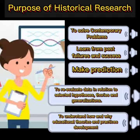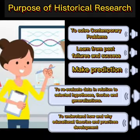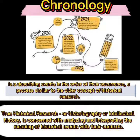The historian attempts to give meaning to the facts in light of a relevant query. The basic purposes of historical research are to provide a clear perspective of the present and to facilitate planning for the future by identifying general principles applicable to recurring situations. Purposes include: to solve contemporary problems, learn from past failures and success, make predictions, re-evaluate data in relation to selected hypotheses, theories, and generalizations, and to understand how and why educational theories and practices develop.